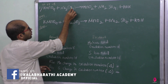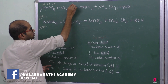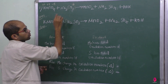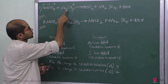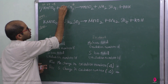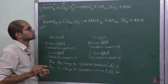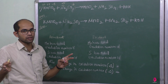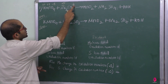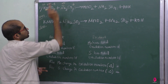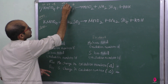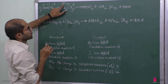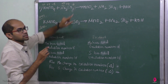Now for Na2SO3: oxygen is minus 2, so 3 oxygens give minus 6. Sodium is plus 1; two sodium atoms give plus 2. So what does sulfur have to be to make it neutral? With minus 6 and plus 2 from sodium, sulfur has to be plus 4. Plus 4 plus 2 minus 6 equals zero, neutral.